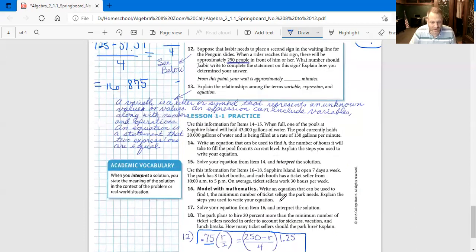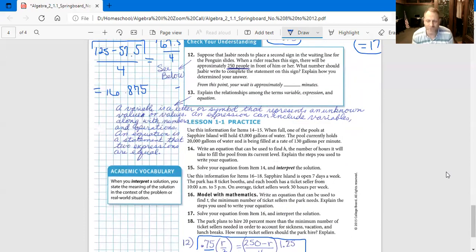Number 13: Explain the relationships among the terms variables, expression, and equation. A variable is a letter or symbol that represents an unknown value or values. An expression can include variables along with numbers and operations. An equation is a statement that two expressions are equal. Write that down for number 13, homeschoolers. Now we're at the end of the video.